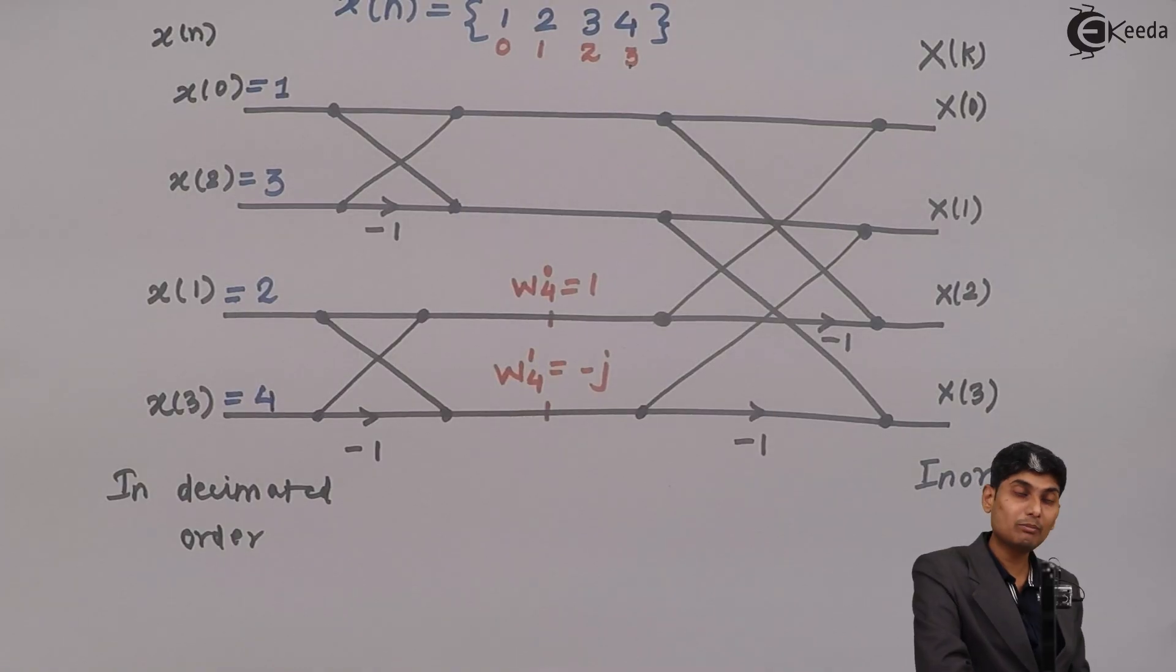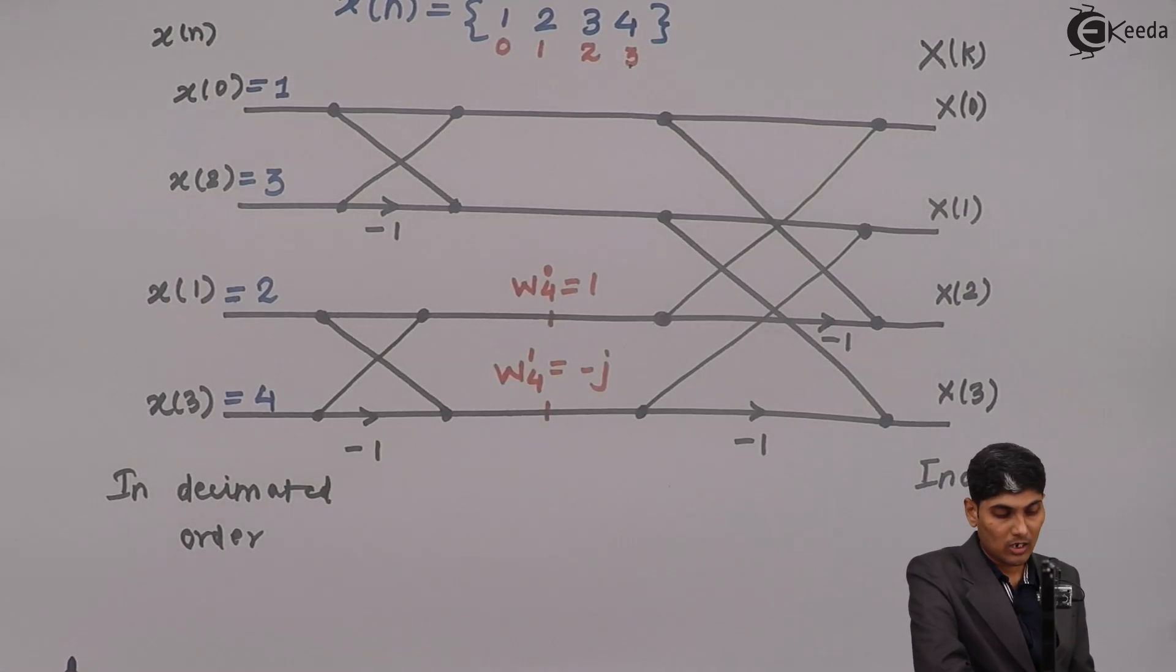So I am writing the amplitude value of particular value at particular value of n. When n is even, we club them together and wherever n is odd, we club them together.